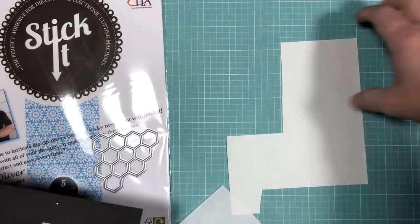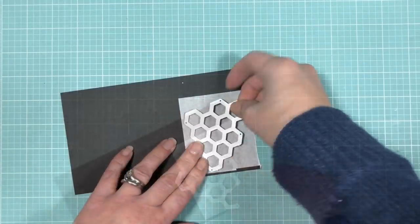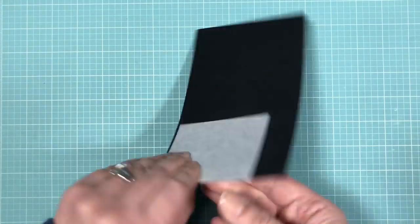Here I'm just showing you how I create the sticker for the honeycomb die that I'll be using on top of some acetate.